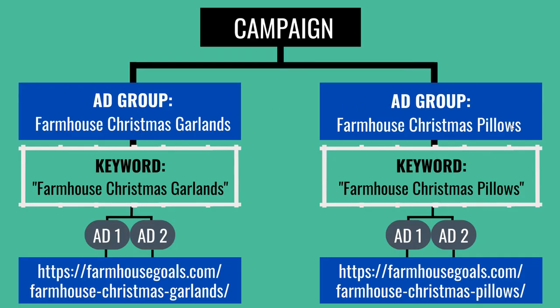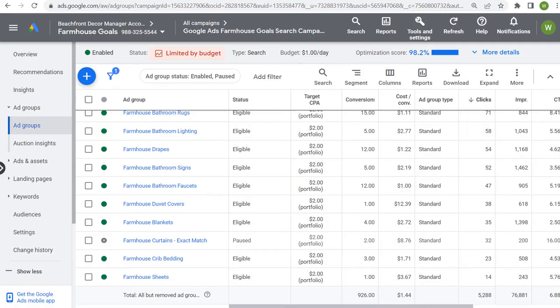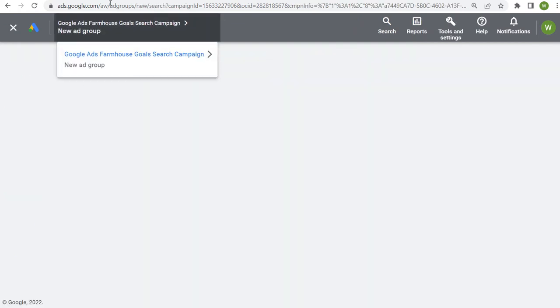When it's time to target the keyword farmhouse Christmas pillows, that becomes a new ad group. You don't want to put all your Christmas keywords into one single ad group — the theme isn't just Christmas, it's Christmas garlands, or Christmas pillows specifically. You want to make sure people are seeing exactly what they are looking for.